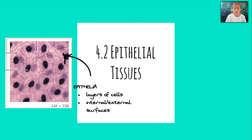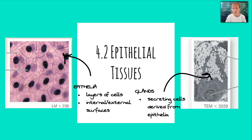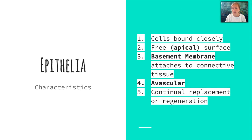Let's first start talking about epithelial tissues. Epithelial tissues are made up of epithelia, which are layers of cells exposed to internal and external surfaces. There are also glands, which are secreting cells derived from these epithelia. Epithelia have some common characteristics: the cells are bound closely together, they are usually free on an apical surface — meaning something exposed to the exterior, either inside or outside the body. They're attached to a basement membrane, which connects them to a connective tissue. They are avascular, meaning they do not have blood vessels, and they have the ability to replace and regenerate themselves.